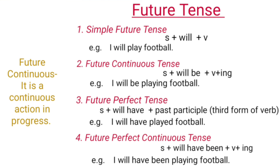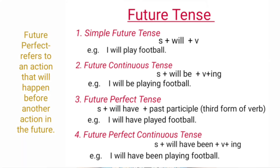Future continuous tense is a continuous action in progress. It is formed of Subject plus 'will be' plus verb plus -ing. Its example is 'I will be playing football.'